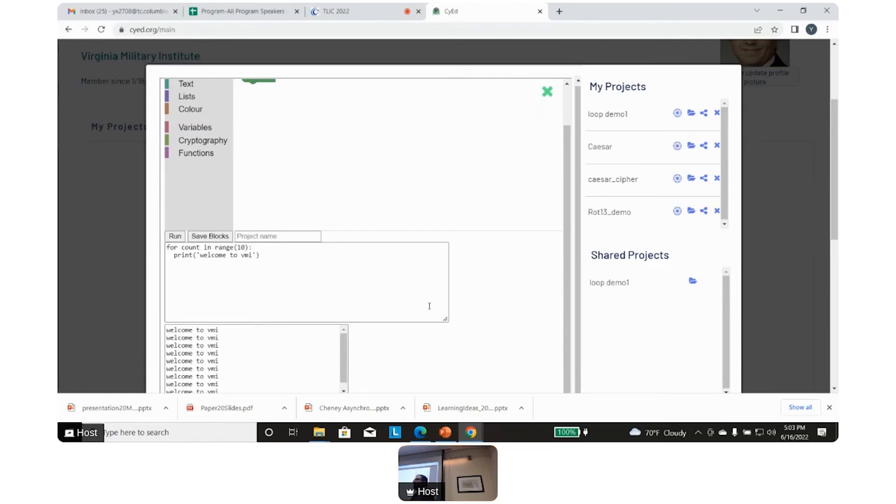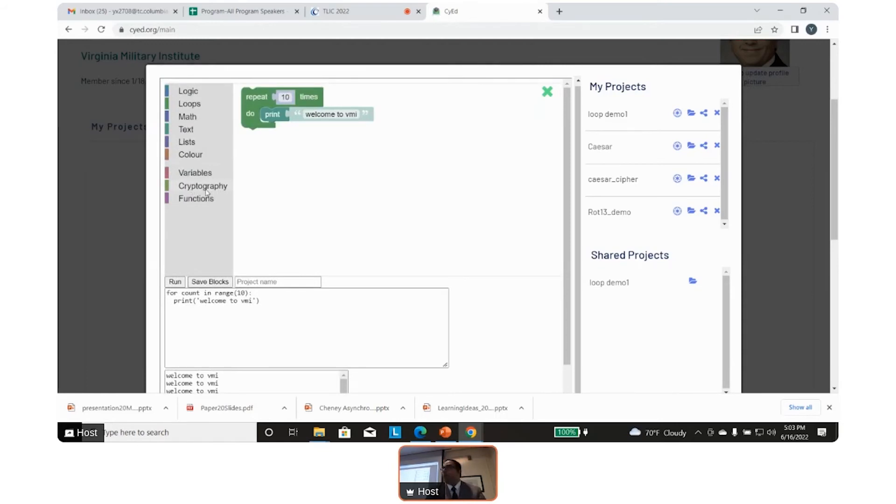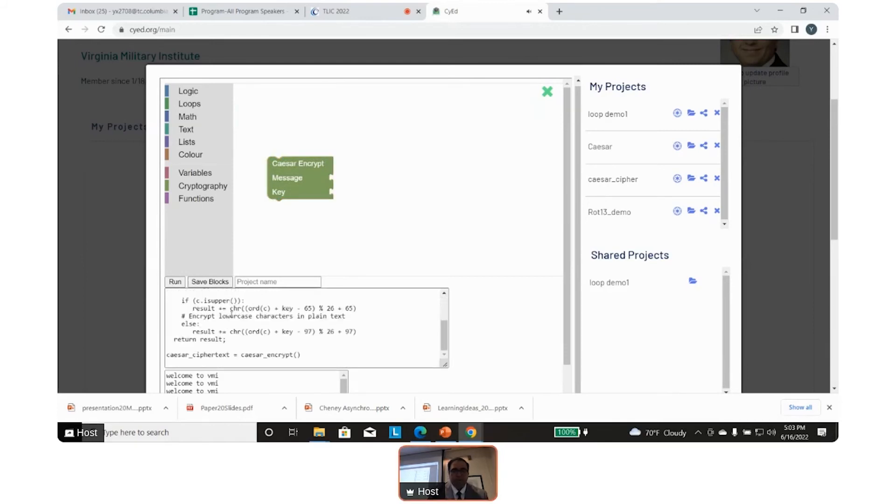We added here a plugin for cryptography. If you want to do encryption using one of these ciphers, you can just drag and drop it. For example, here Caesar cipher. I can delete this block and it is updating the code here. This is a Caesar cipher that does encryption in Python.